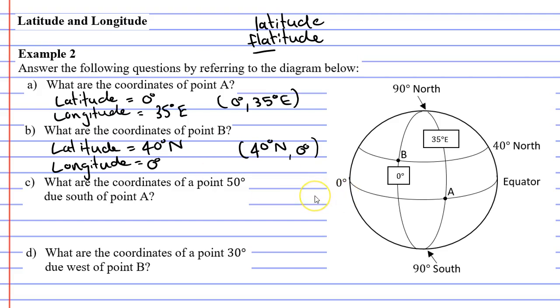It basically means we're going to come down about here, and I'll draw my parallel of latitude, which is going to be 50 degrees below the equator. So that's my new coordinate.